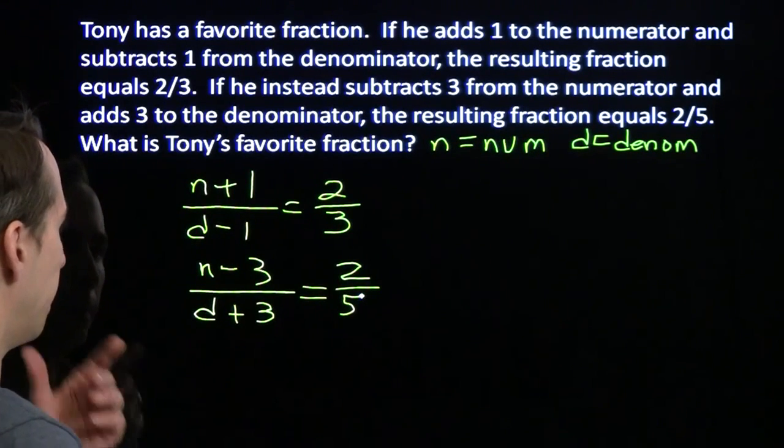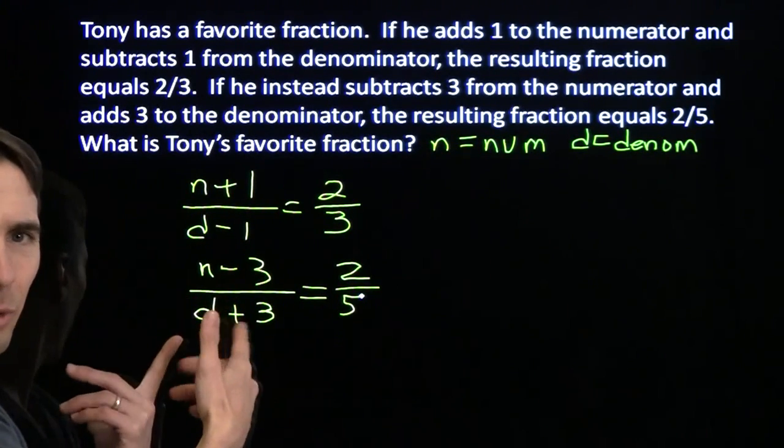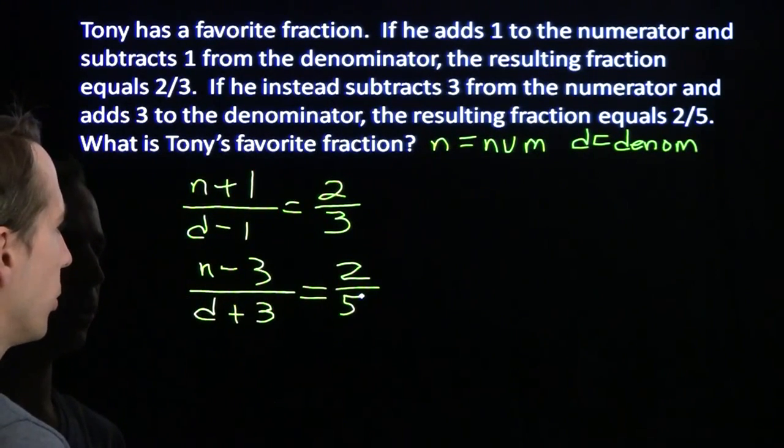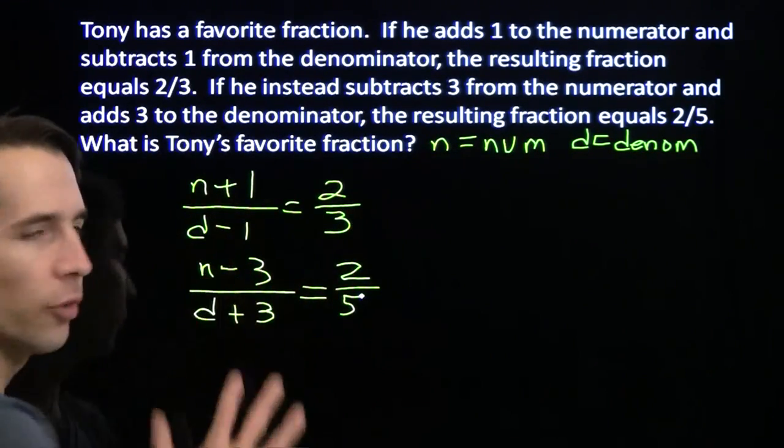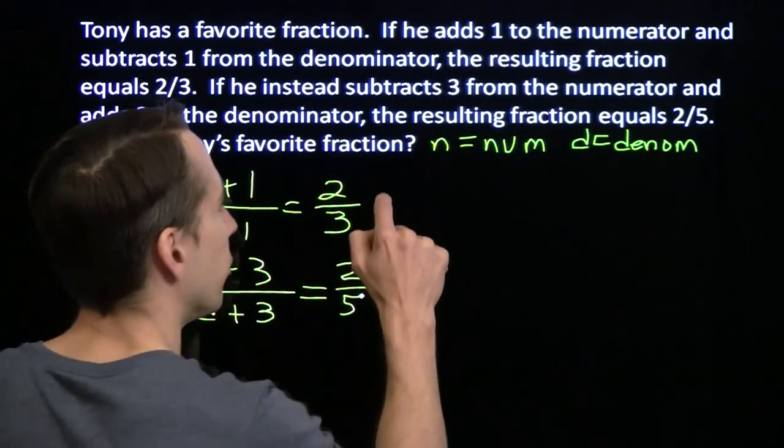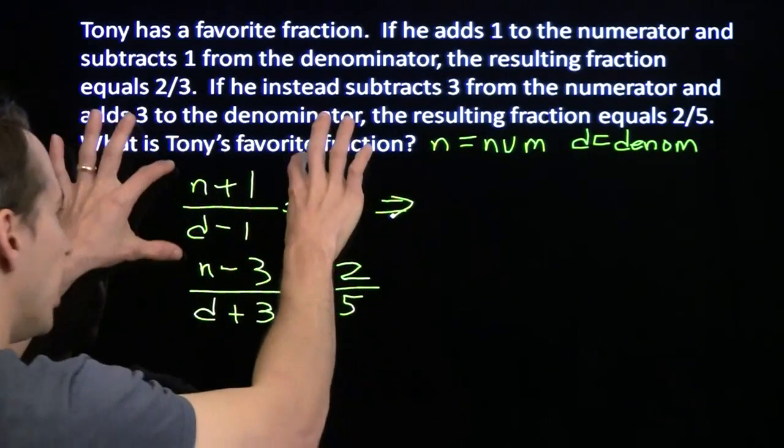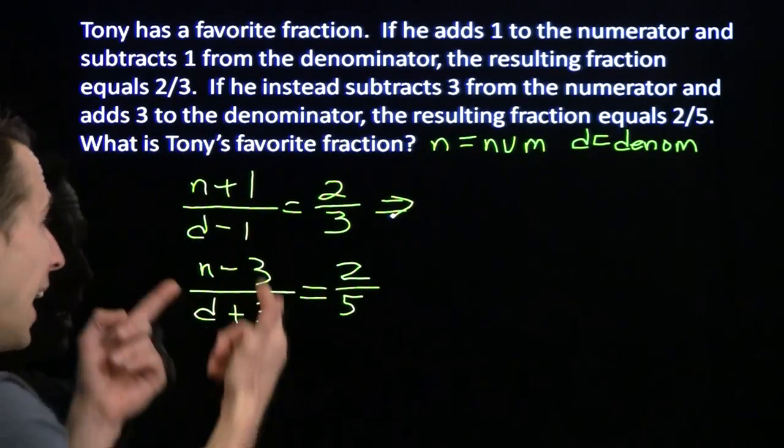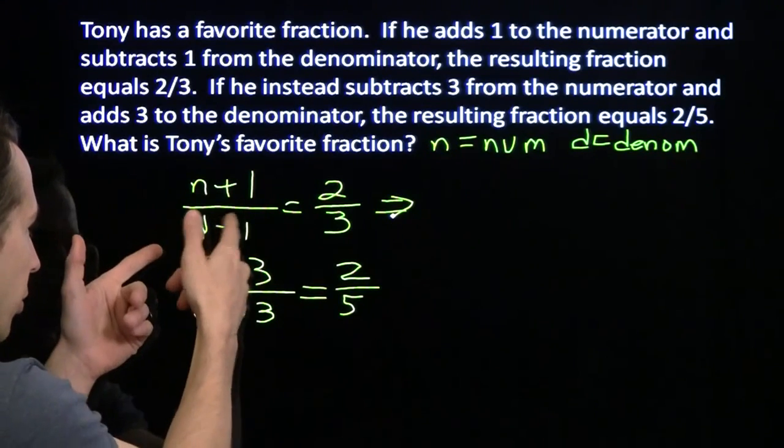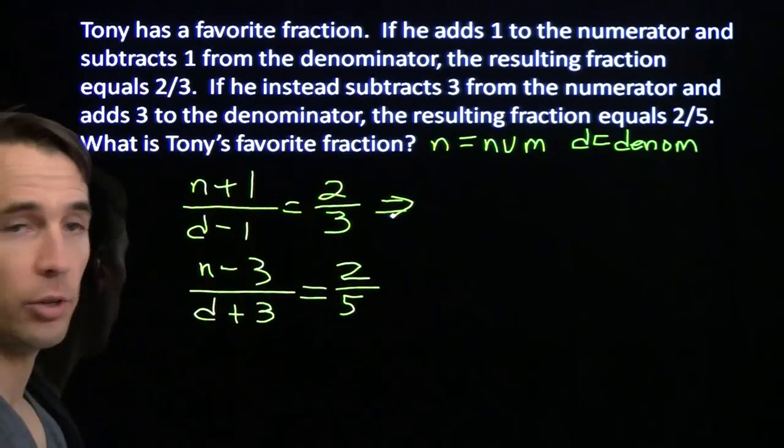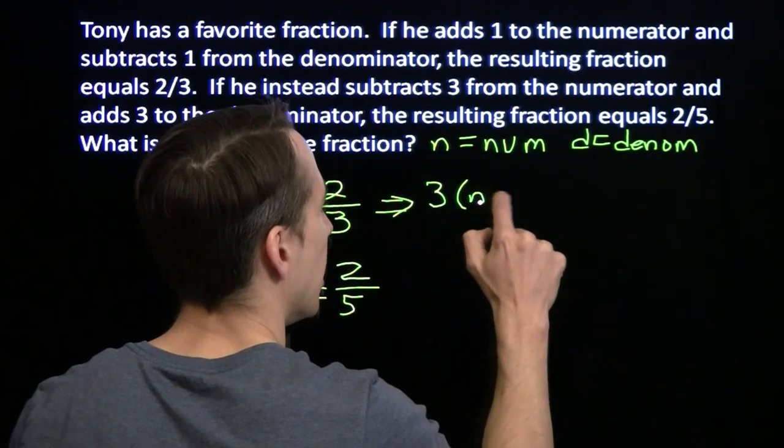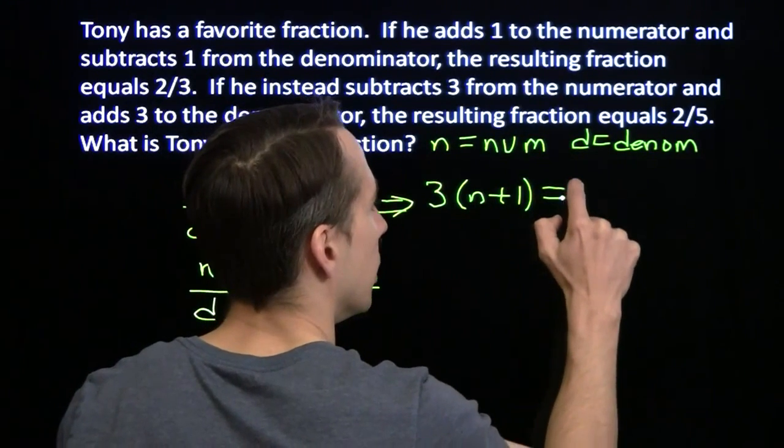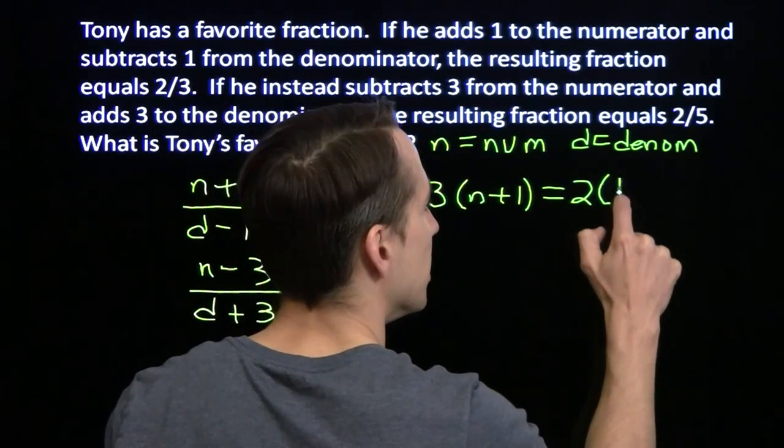Yikes. I don't like those variables in the denominator stuff. That's no good. So what I'm going to do here first is I'm going to get rid of these fractions. Fractions make me a little nervous. What I'll do is I'll multiply this first equation. I'm going to multiply both sides by 3 and by d minus 1.